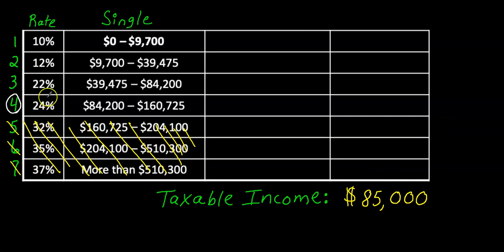You're only responsible for paying 24% on any amount over $84,200. And if you think this through, $85,000 is $800 over $84,200. So you're only responsible for paying 24% on $800. This will make sense as we work through it.